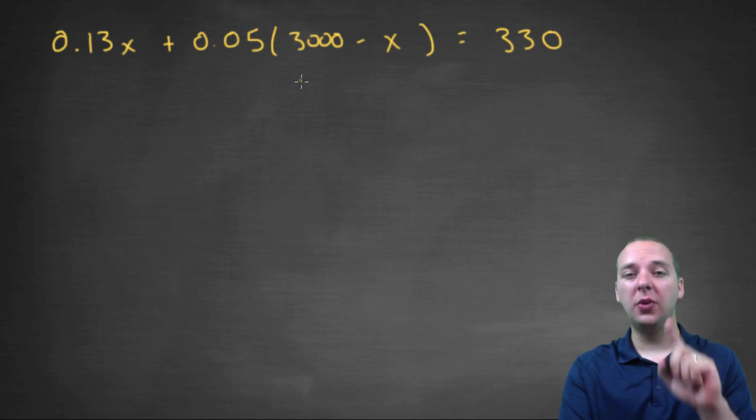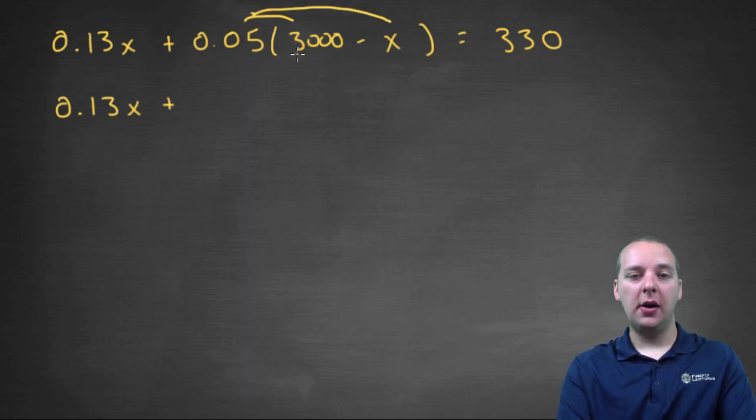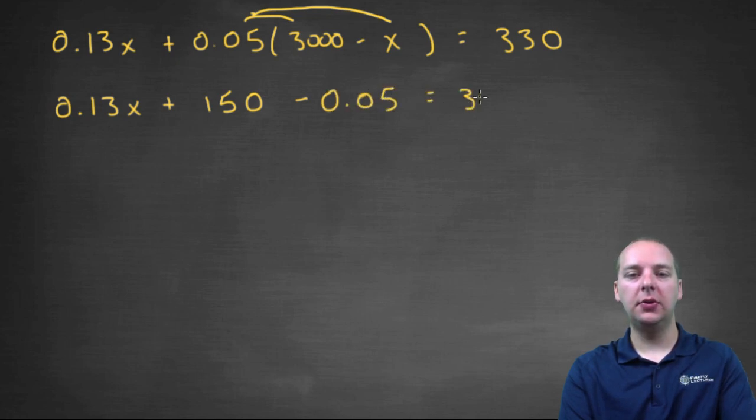0.13X plus 0.05Y equals three thirty, but I subbed out the Y right here. This is great, this is an equation with only one variable, should be easier to solve. So we'd have 0.13X plus, and then we'll distribute this particular guy right here. So we would have fifteen hundred and fifty, I believe, if my math is right, minus 0.05X equals three thirty.